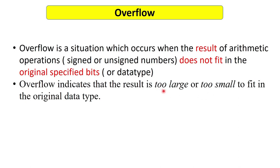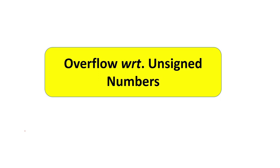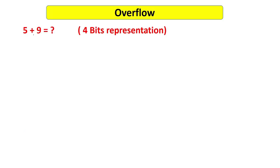In unsigned numbers, we will understand that the result may be too large to fit in the original data size. The concept of 'too small' is seen in the signed case. Let's take some examples. Here are our two numbers, 5 and 9, and we are adding them. The numbers should be represented in four bits, and we are dealing with unsigned numbers in this video.